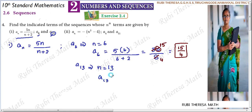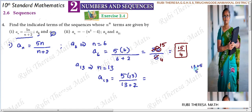a13 means n equals 13. So a13 equals 5 into 13 divided by (13 plus 2). What is 5 into 13? 5 into 10 is 50, and 5 into 3 is 15, so 50 plus 15 is 65. Therefore a13 equals 65 by 15.